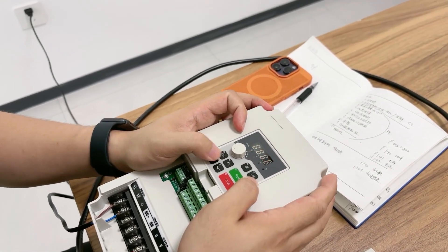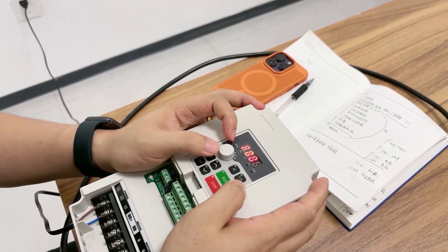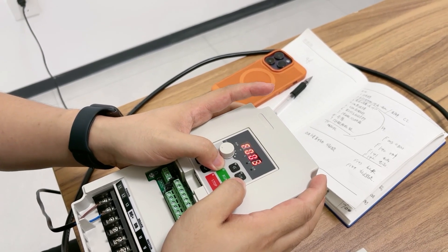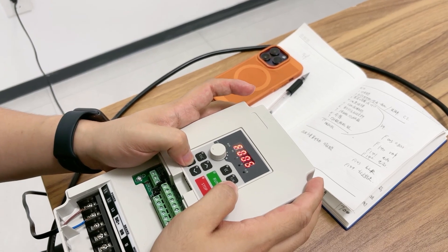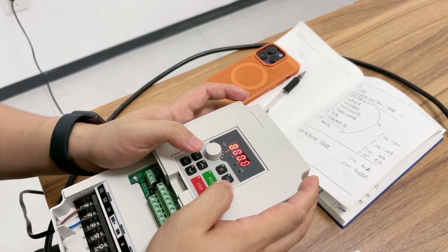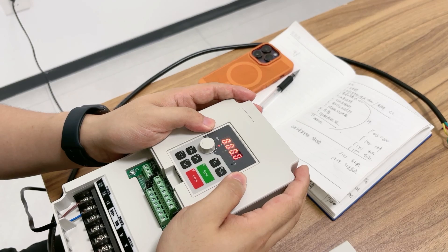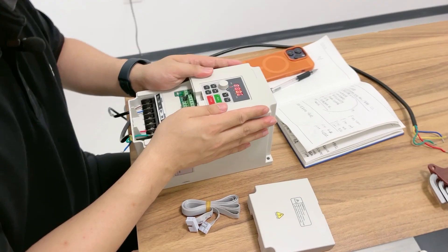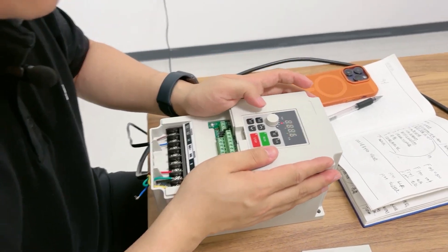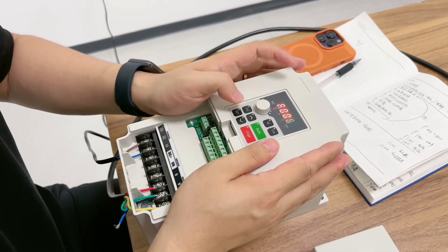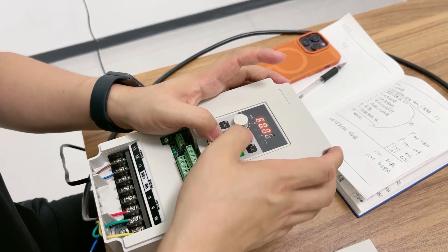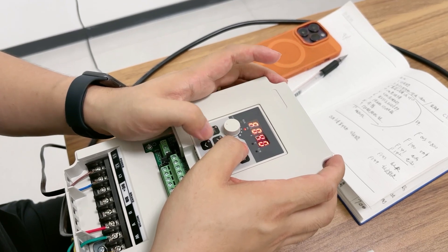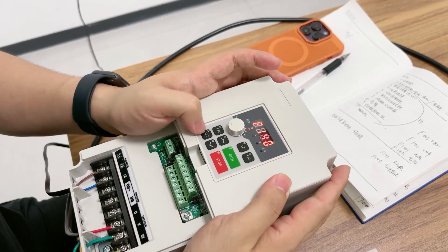First we need to press Set and we need to choose P005 and press Set. As you can see, I just set everything well in advance. Next we need to set the power. It's going to F140. And press Set. Remember, F140 is power.